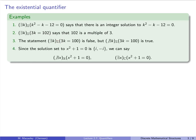Since the solution set to X squared plus 1 equals 0 is i and negative i — where i is the square root of negative 1 — we can say: there does not exist an X over the real numbers such that X squared plus 1 equals 0. But there does exist an X over the complex numbers such that X squared plus 1 equals 0. Note that when I said the solution set is i and negative i, I was implicitly assuming we are over the complex numbers.